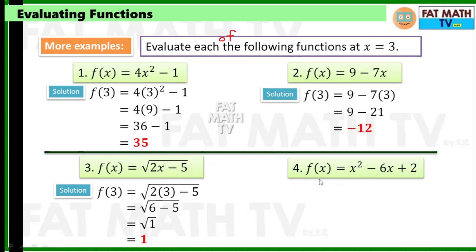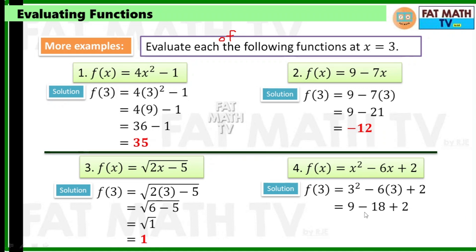Number 4, f of 3 is 3 squared minus 6 times 3 plus 2. Replace x with 3 and simplify. 3 squared is 9, 6 times 3 is 18. For addition and subtraction together, perform operations from left to right. So 9 minus 18 is negative 9, then negative 9 plus 2 is negative 7. So f of 3 is negative 7.